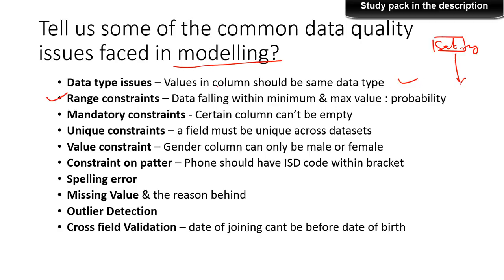Range constraints. Like some data always fall in a particular range. For instance, probability. Now probability always has a minimum value of 0 and maximum value of 1. It cannot be a negative number and it cannot go beyond 1. It has to be between 0 and 1. So that's a range constraint. That is always there for a number of different variables. And ensure that you check that before you go ahead with modeling.